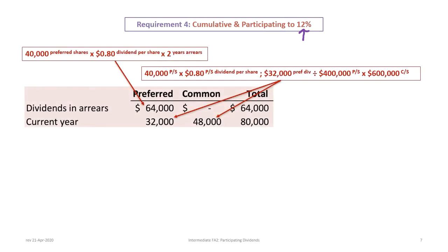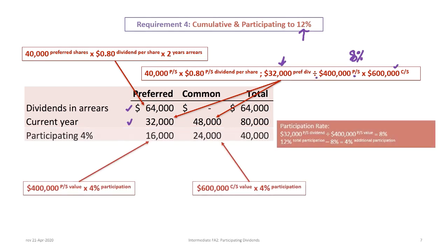Requirement four: preferred shares are cumulative and participating, but only to 12 percent. We start the same way — $64,000 in preferred shares in arrears, $32,000 for the current year, and $48,000 to common shares based on 8% relative participation. The preferred shareholders receive $32,000 in dividends divided by $400,000 preferred share value, which is 8%, and 8% times $600,000 common shares is $48,000.